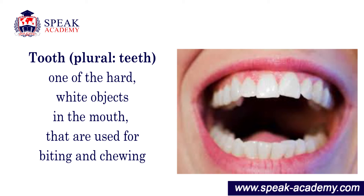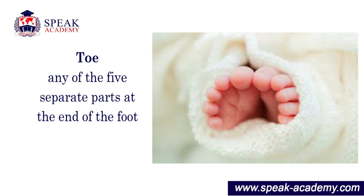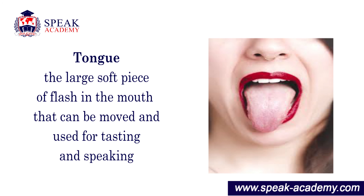Tooth or teeth: one of the hard white objects in the mouth that are used for biting and chewing. Toe: any of the five separate parts at the end of the foot. Tongue: the large soft piece of flesh in the mouth that can be moved and used for tasting and speaking.